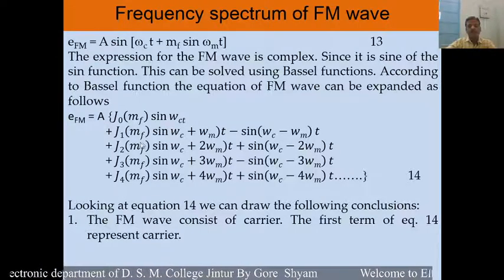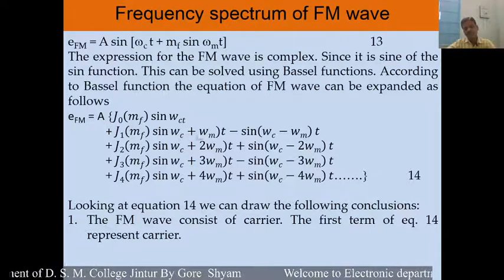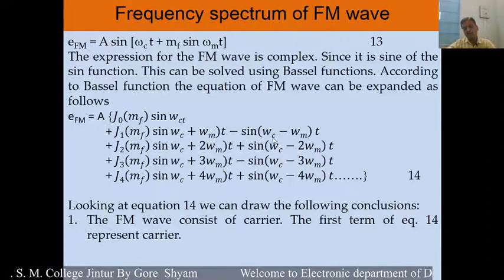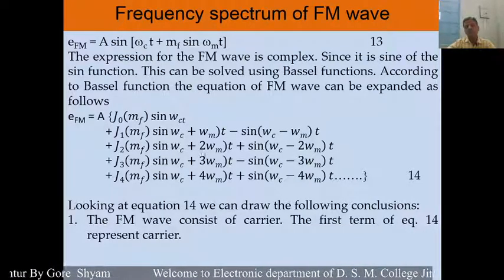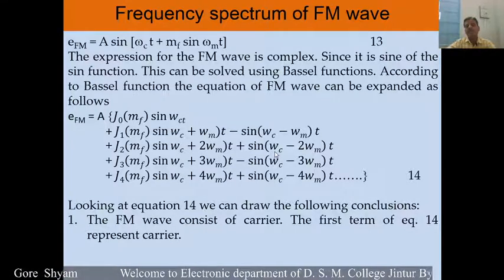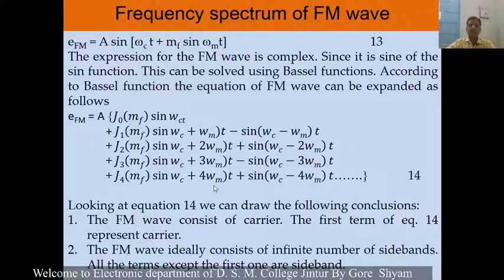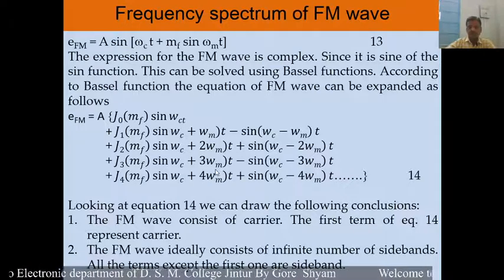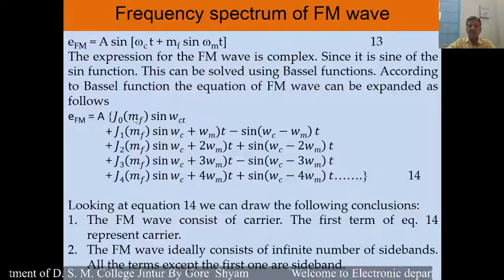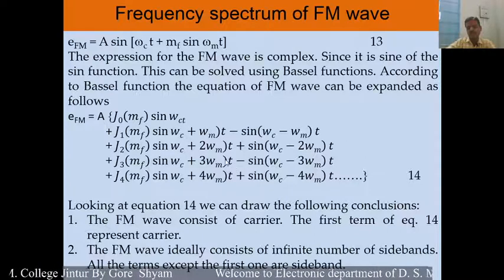Another observation is that there are many side bands. The first side band is at ωc + ωm, and on the other side, ωc − ωm. The next side band is at ωc + 2ωm, and on the other side, ωc − 2ωm. In this way, there are a number of side bands — we can say that in frequency modulation, an infinite number of side bands are present.